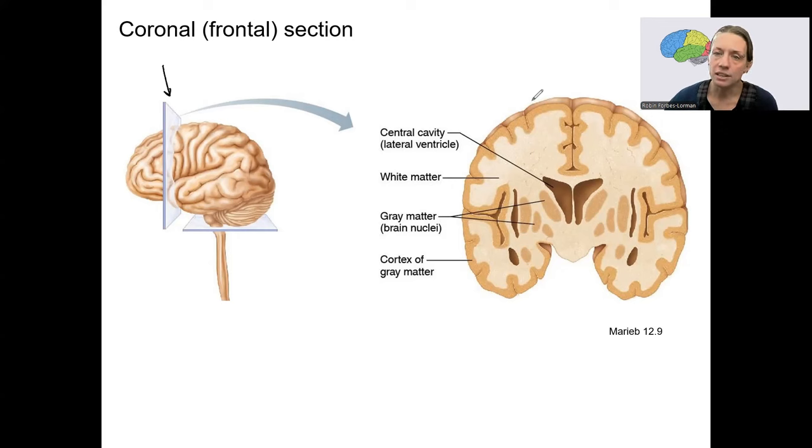Cerebral cortex is the outer layer. Basically, this would be a chunk of cerebral cortex. There is white matter. All this white stuff is white matter. That's axons. Myelinated axons. That's why it's white.